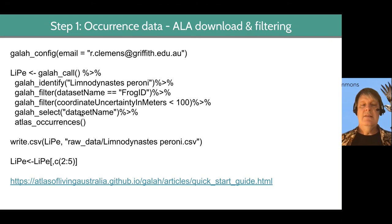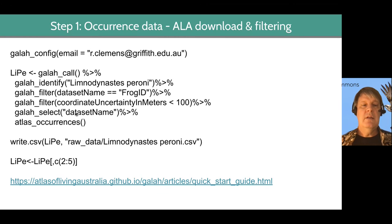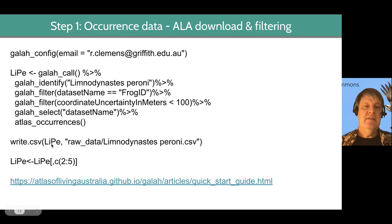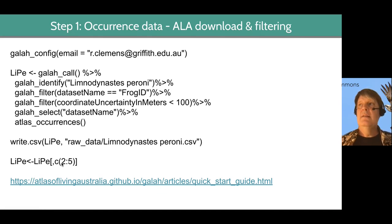galah_select() means I want the dataset name column as well as these other columns — I don't need to filter this column, but I want to include it in my dataset. atlas_occurrences() means we're going to generate an occurrence dataset from this query. Once you've done that, you can write that file — LIPE stands for Limnodynastes paranae, so this little frog.